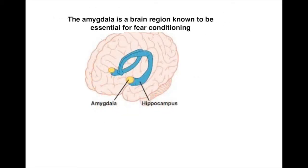The area of the brain that we're going to be concerned with is a region called the amygdala, a region of the forebrain next to the hippocampus that is known to be essential for fear conditioning.